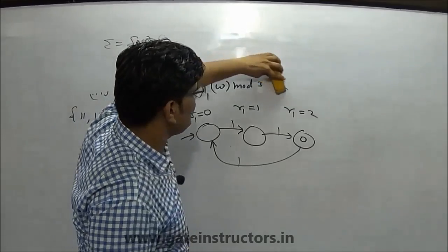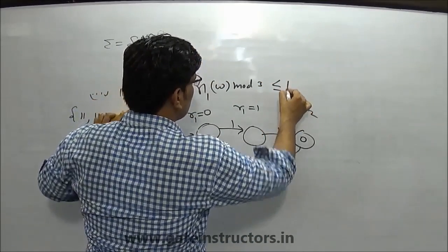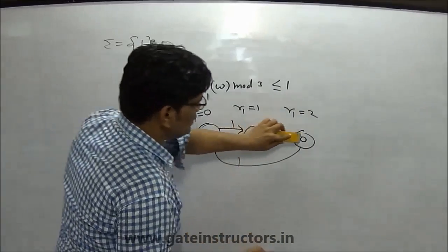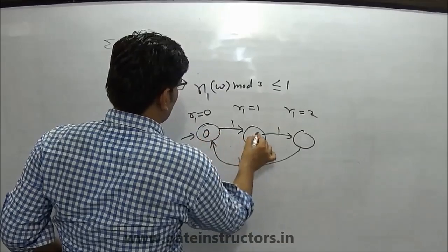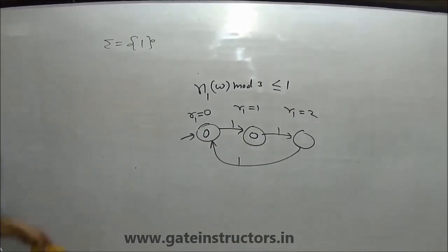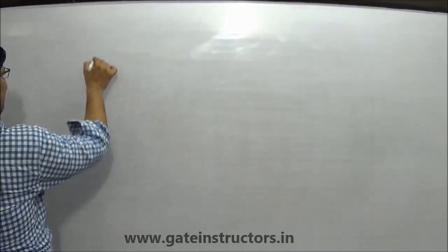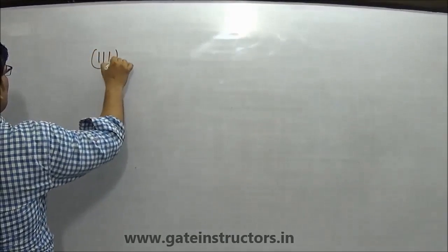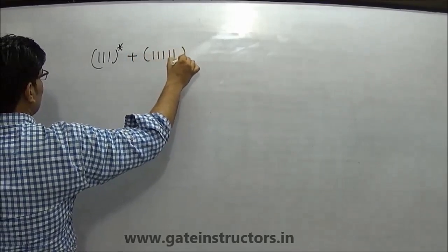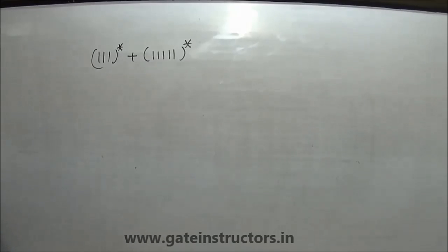If you ask for this — what is your language where mod 3 is less than or equal to 1? If you create a DFA for this, then this will be your DFA for this language. You can create a finite automaton design for this language, and you can create a finite automaton design for it.